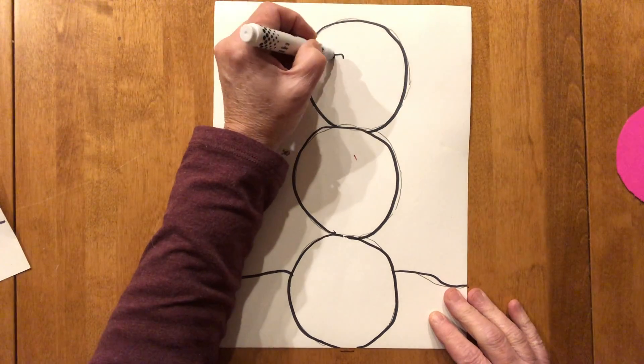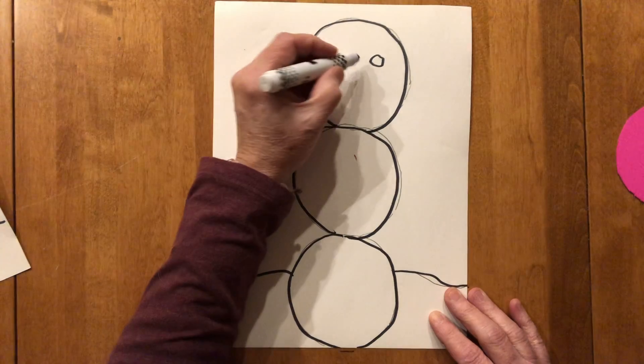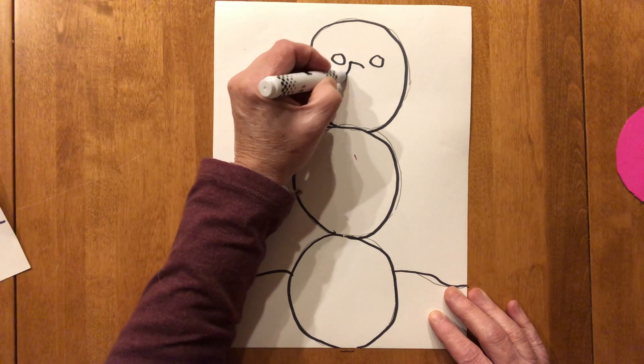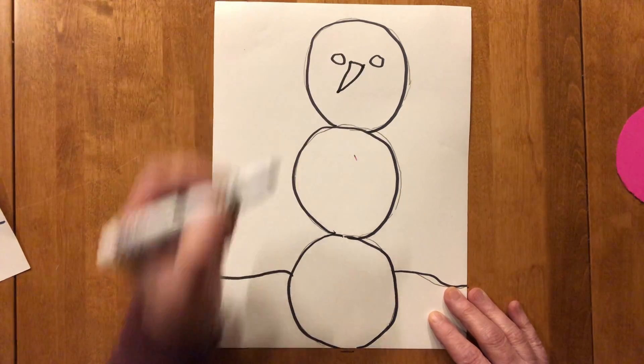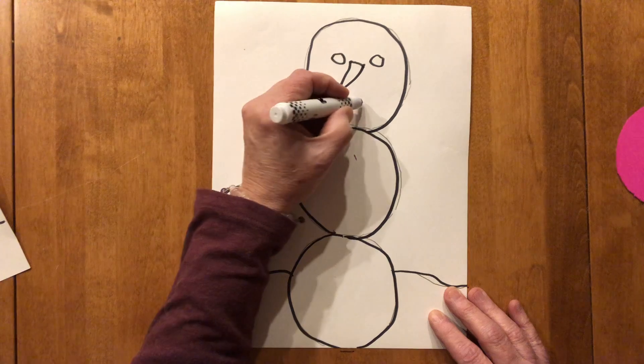Okay, so let's add two circles for the eyes. We're going to draw a triangle for the carrot nose. Then we're going to do coal for the mouth.